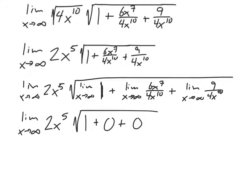So 1 plus 0 plus 0 equals 1, and the square root of 1 is 1. The whole thing boils down to the limit as x approaches infinity of 2x to the 5th. That's why we can just take the square root of the biggest term to know the coefficient and the degree. Because everything else, when we do the limit, approaches zero and doesn't end up changing anything.